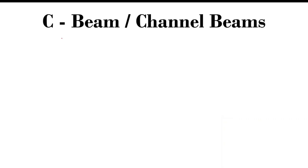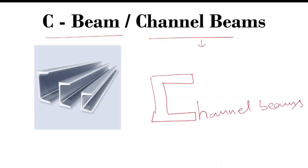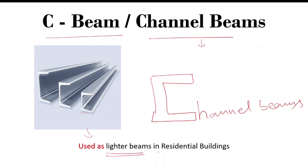The next type is C-beams, also called channel beams. The cross-section resembles the letter C. C-beams are used as support for lighter loads and are very much preferred in residential building construction rather than heavy or commercial constructions.